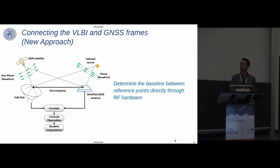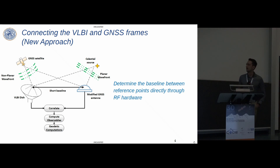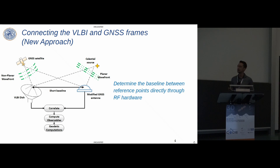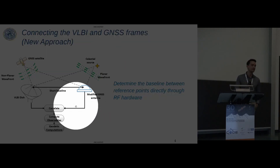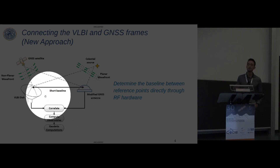We've actually been able to demonstrate that using interferometric processing we can see natural radio sources — some of the brighter ones — using a GNSS antenna to VLBI radio telescope interferometer. However, it's much more difficult; we have to do coherent integration for up to five to ten minutes to detect one. So I'm going to focus on co-observing GNSS satellites, because we can see many more per unit time.